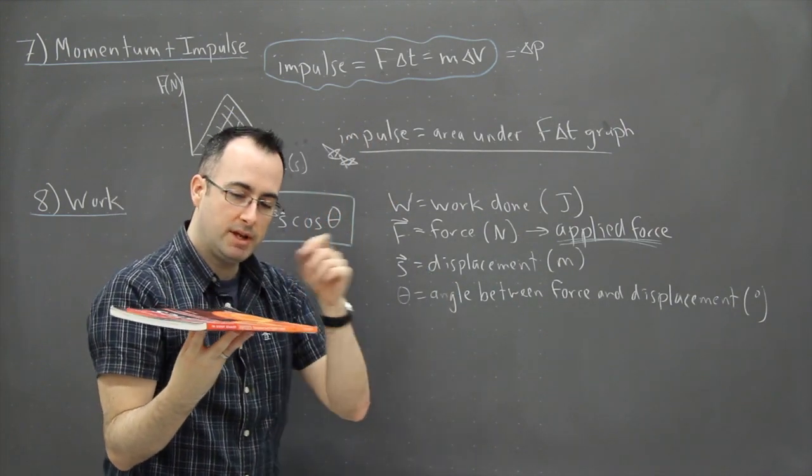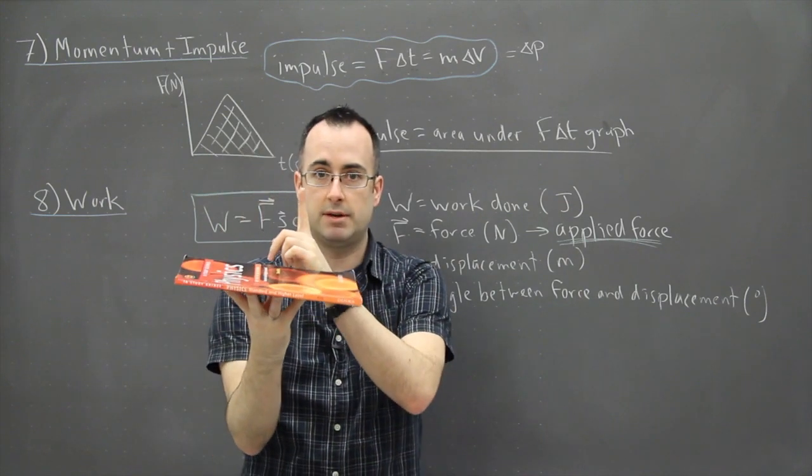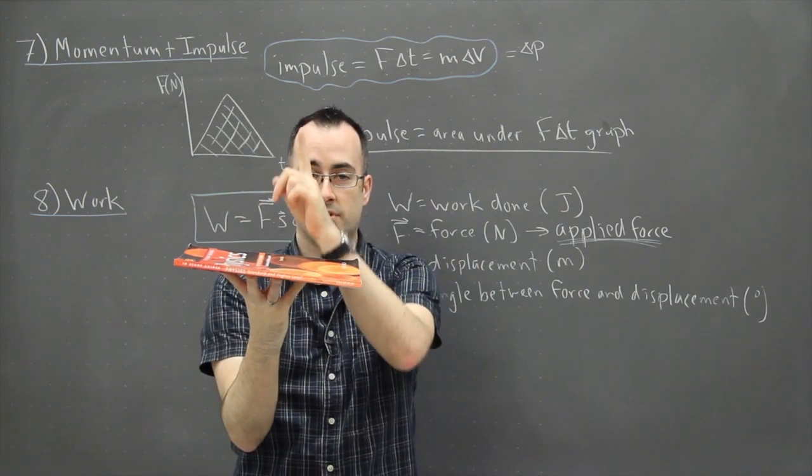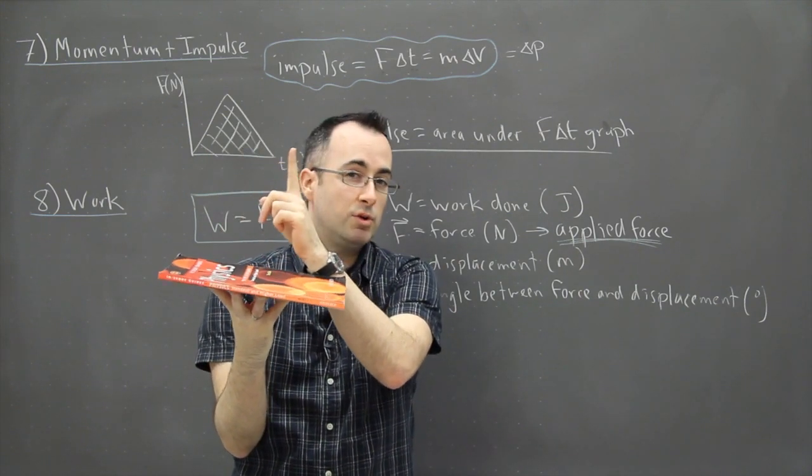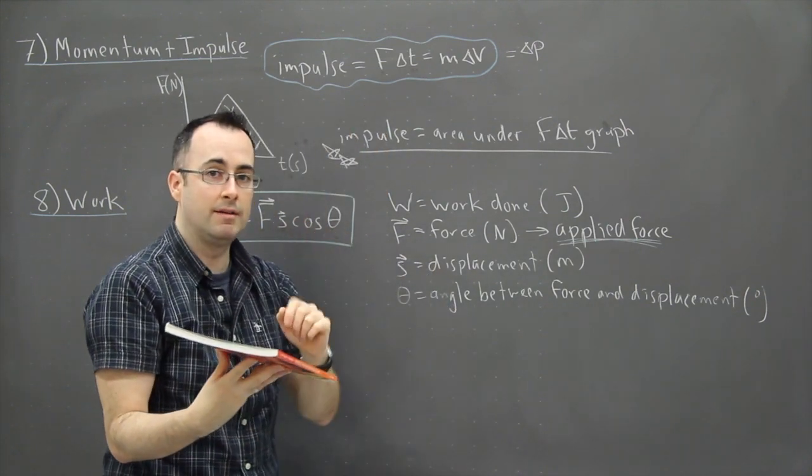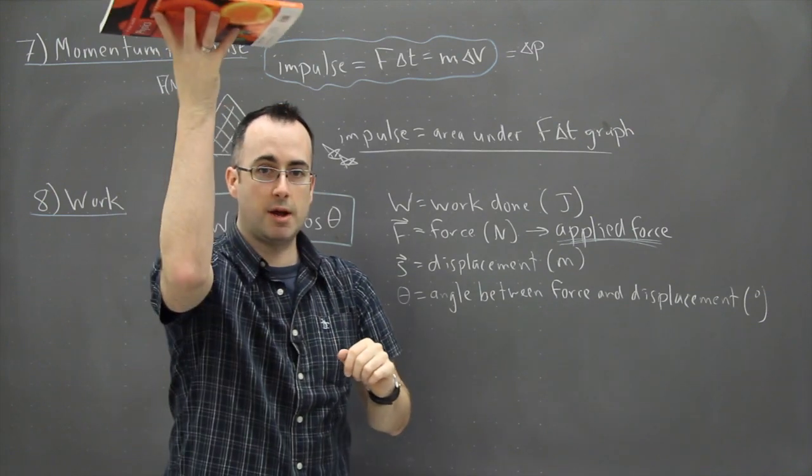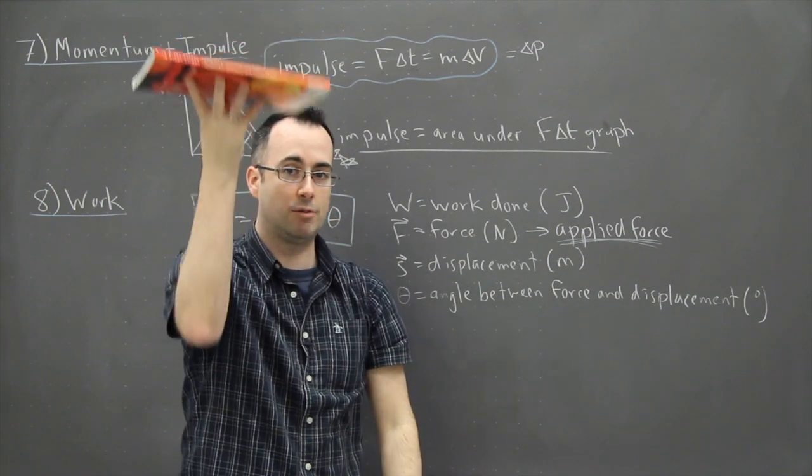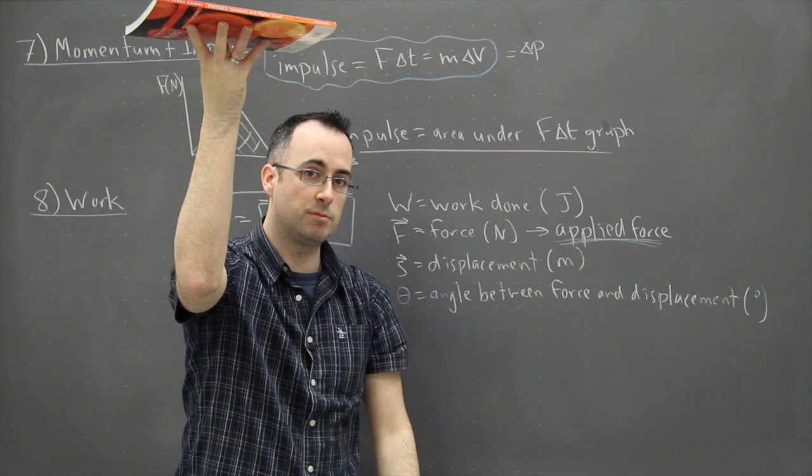The angle between these two things, between my applied force and my displacement, is zero. The cosine of zero is one. So if you're just going straight up it's just F times S. In other words, your force times your displacement to bring it up.